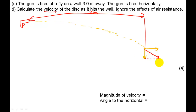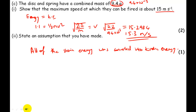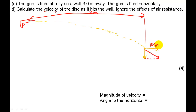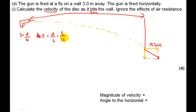When the disc reaches the wall it has both a horizontal and a vertical velocity component. The resultant velocity is the vector sum of these two components. To find the magnitude and angle I need the vertical velocity — I already have the horizontal velocity of 15.3 m/s from the previous question. Since the wall is 3 meters away, time = distance / speed = 3 / 15.3 = 0.2 seconds.